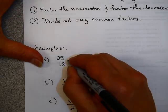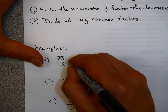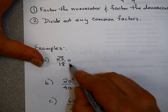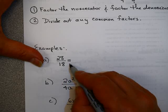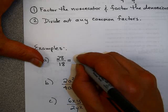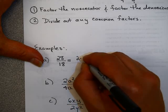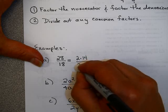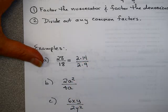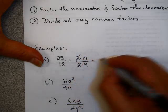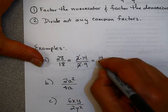28 over 18. I certainly know 28 is 2 times 14 and 18 is 2 times 9. The 2s will divide out and you get 14 over 9.